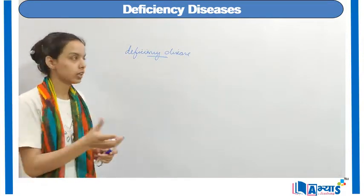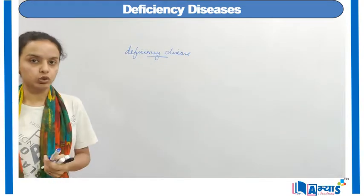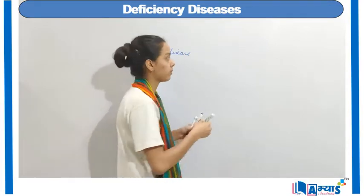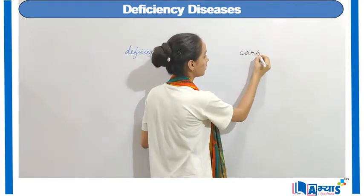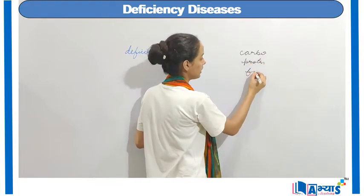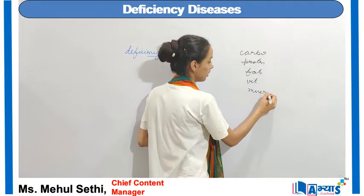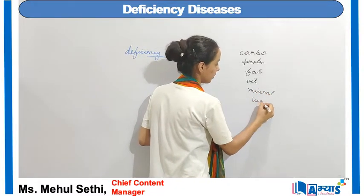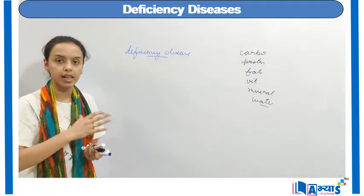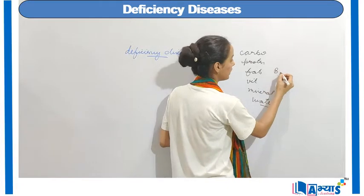Now, we will discuss the category of deficiency diseases. As we know, there are so many nutrients in food, and these nutrients can be carbohydrates, they can be proteins, fats, vitamins, minerals, and even water. Whenever we are taking all these nutrients in a healthy quantity, in a right quantity, this is known as the balanced diet.